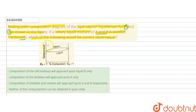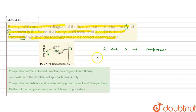Now, if we see this composition diagram for two components A and B in vapor-liquid equilibrium, we can see this is their boiling points. If this is for A, that is TA, and this is for TB, it means B has a higher boiling point than A. Because if we draw an intersection line, that gives us that the boiling point of B is greater than the boiling point of A.